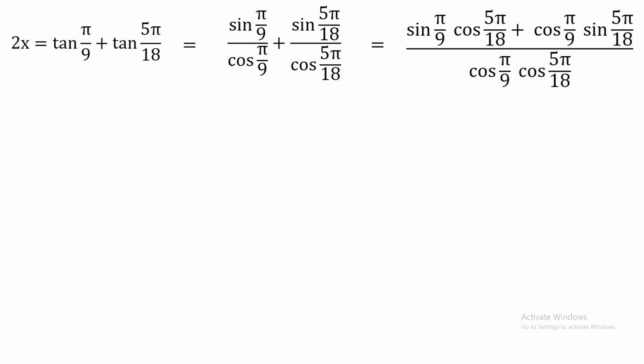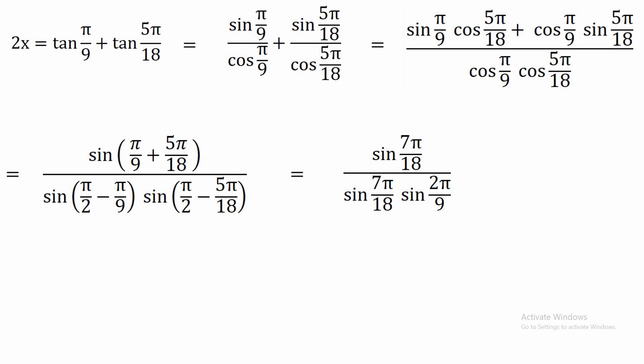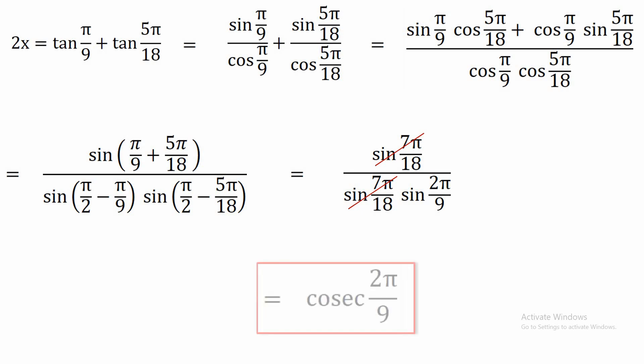In the numerator, we recognize the sin addition formula, so we apply it to get sin(π/9 + 5π/18). For the denominator, we use cos θ = sin(π/2 − θ), rewriting it as sin(π/2 − π/9)·sin(π/2 − 5π/18). On simplification, the numerator becomes sin(7π/18), and the denominator becomes sin(7π/18)·sin(2π/9). Cancelling sin(7π/18) from numerator and denominator, the first result is 2x = 1/sin(2π/9) — wait, which simplifies to 2x = cos(2π/9).